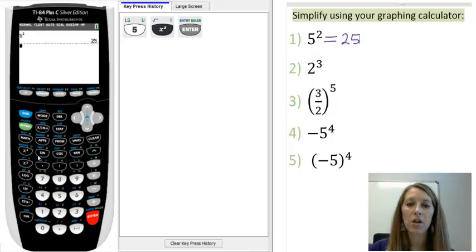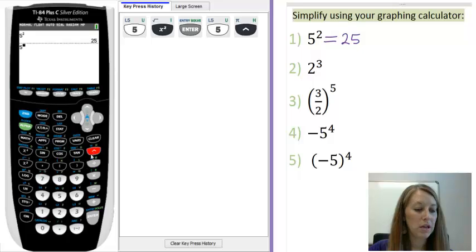Now, to hit any power in your graphing calculator, you can use this caret key or this arrow key up here. And caret is spelled C-A-R-E-T. So, I can also have typed this in by 5 to the, and then the second power.